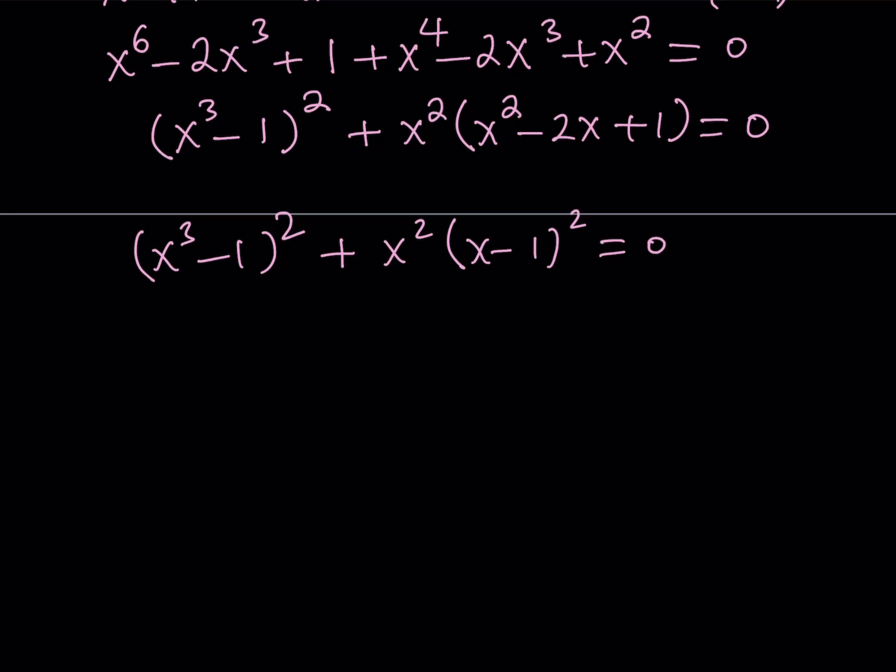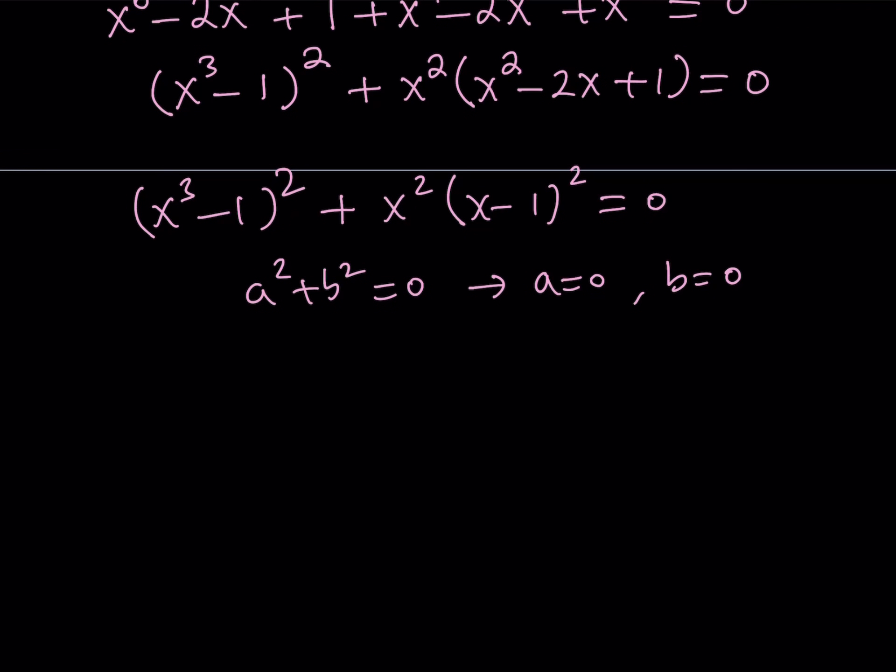So, what happens if a squared plus b squared is 0, and a and b are real numbers? Obviously, none of them can be negative, and I think we kind of looked at this idea recently. When you have the sum of squares equals 0, then you can safely say that a and b are both 0. If, of course, they are real numbers. So, in this case, we get the following result.